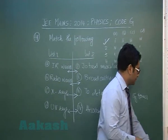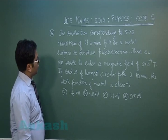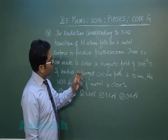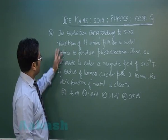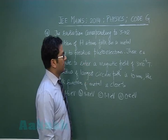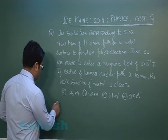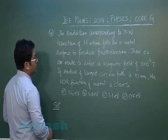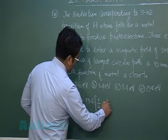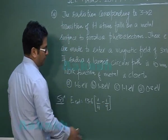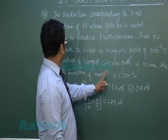Question number 48 comes from modern physics — a combination of atom, photoelectric effect, and magnetic force. Radiation corresponding to the 3 to 2 transition of a hydrogen atom falls on a metal surface to produce photoelectrons. First, calculate the energy of radiation: 13.6 times (1/2² − 1/3²), which gives 1.89 electron volts.